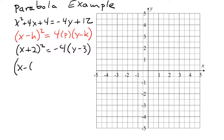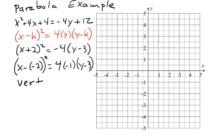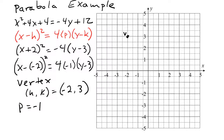To put it in the correct form, we need x minus something and y minus something, so we rewrite x plus 2 as x minus negative 2. We also factor the coefficient as 4 times negative 1. This gives us a vertex at (-2, 3), and p equals negative 1. Since the square is on the x, this parabola opens either up or down; since p is negative, it opens down.